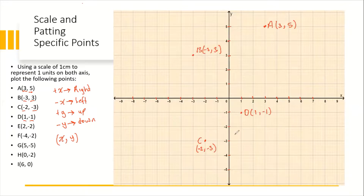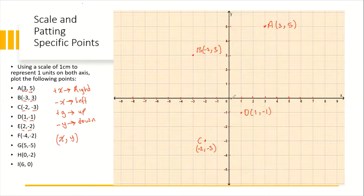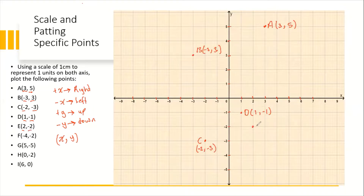For Point E, we have positive two and negative two, suggesting that we are going to go two to the right and two down. From the origin, we go one, two to the right, and from there we go two down: one, two — which takes us right here. That is Point E.